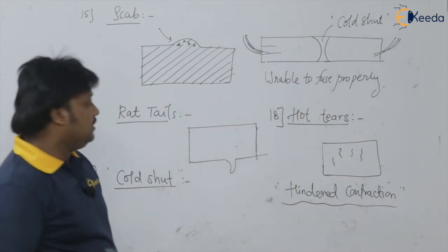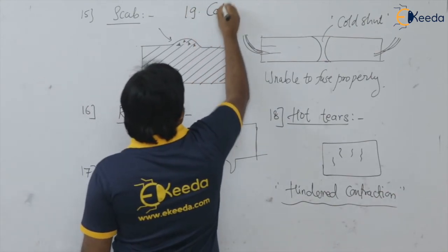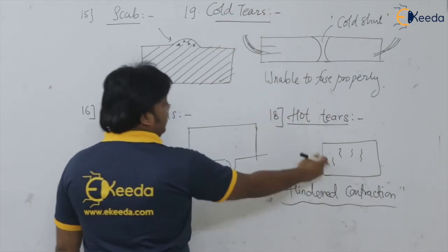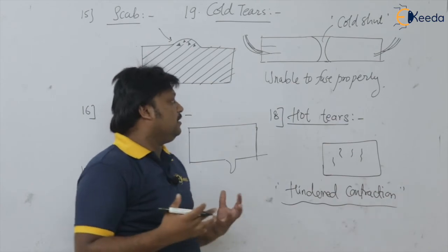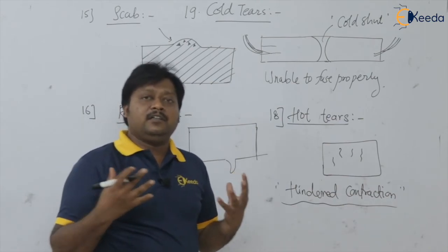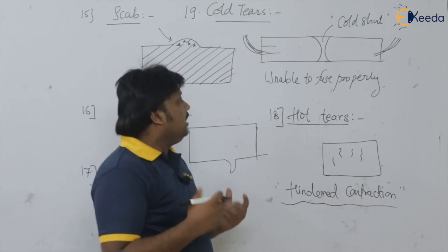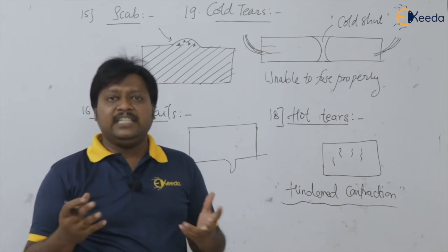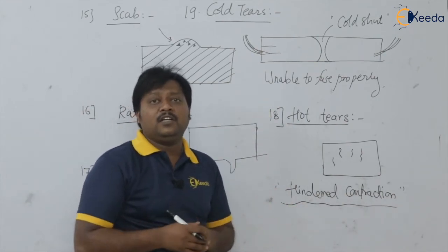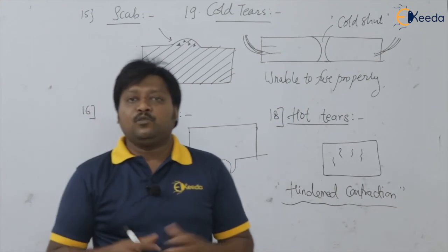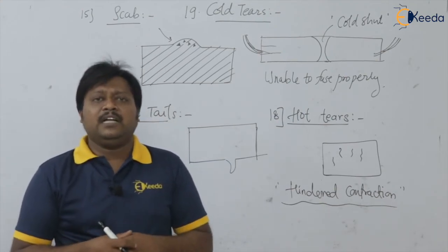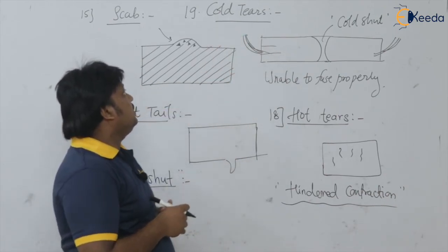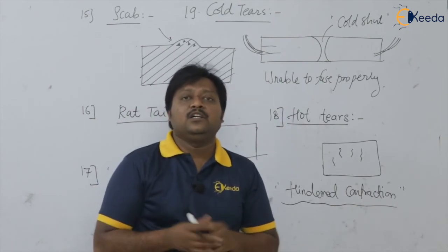We are also having cold tears. These are again cracks onto the casting, but when the casting is just taken out from the mold and there is a dropping of some water, grease, or oil onto the very hot casting surface, immediate quenching of that surface occurs. Because of that, some cracks are generated onto the casting surface. These cracks are known as cold tears.